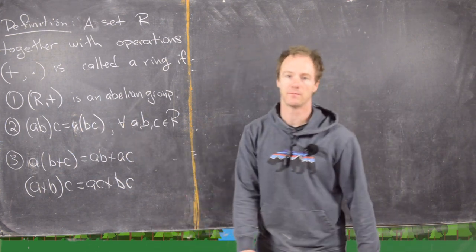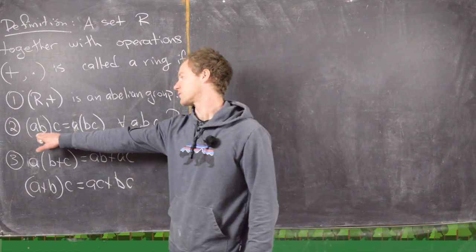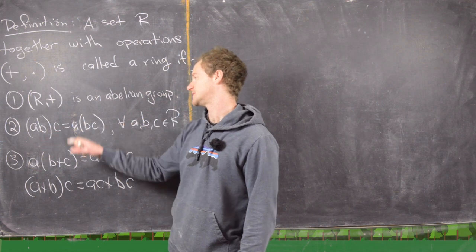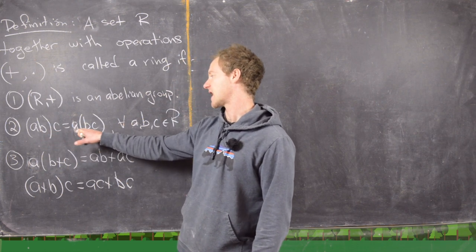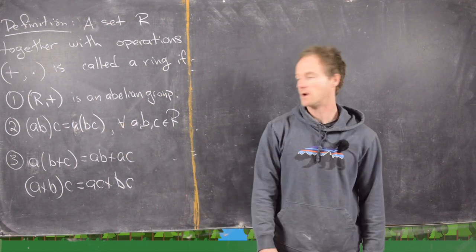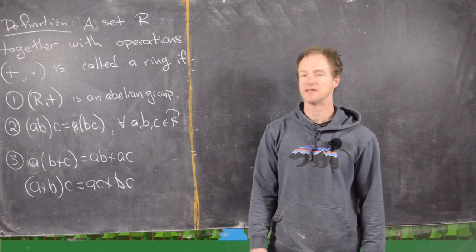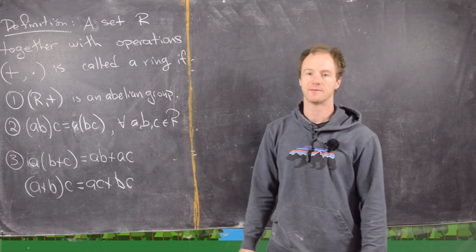And then we have associativity for the multiplication, so in other words if we do a times b times c, that's the same thing as a times the quantity b c.